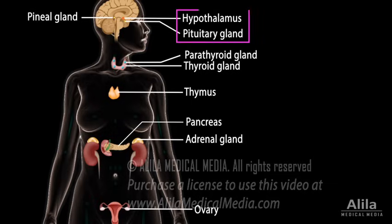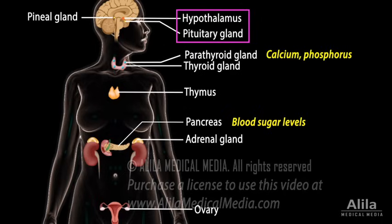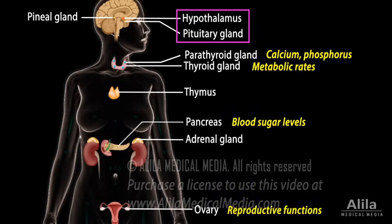Except for the hypothalamus and the pituitary, different endocrine glands are involved in different, more or less independent, processes. For example, the pancreas produces insulin and glucagon that keep blood sugar levels in check. The parathyroid glands produce hormones that regulate calcium and phosphorus. Thyroid hormones control metabolic rates, while the ovaries and testes are involved in reproductive functions.